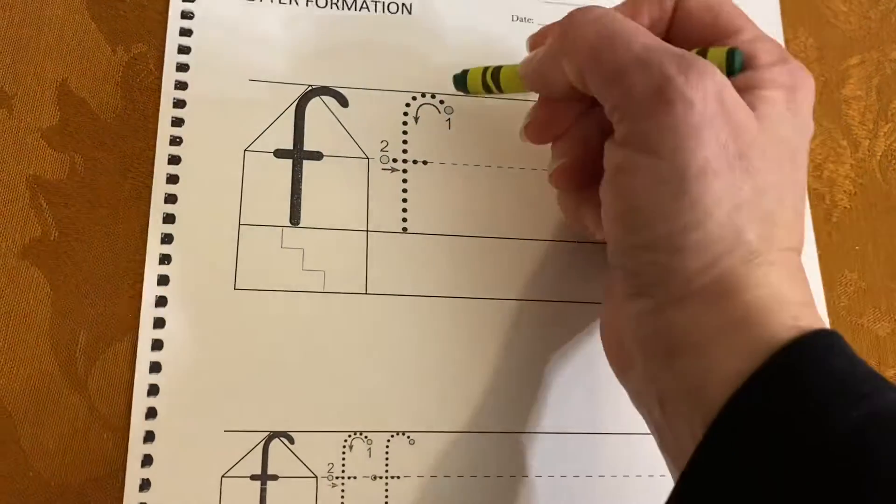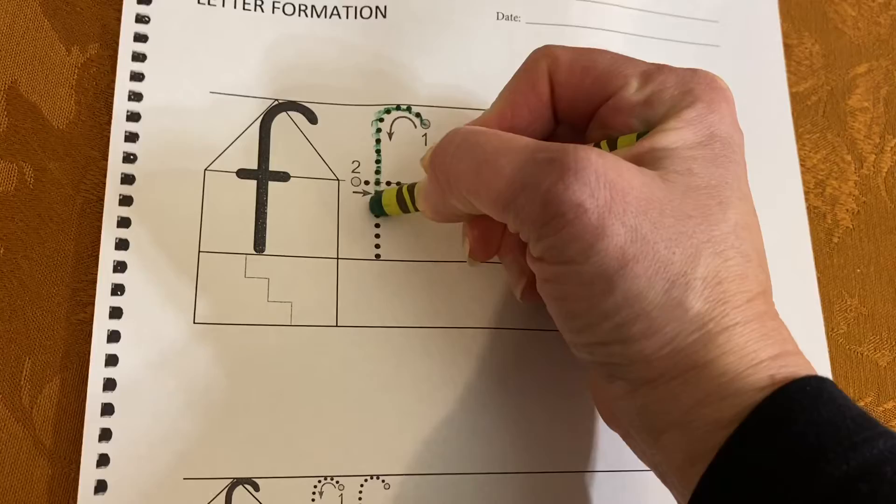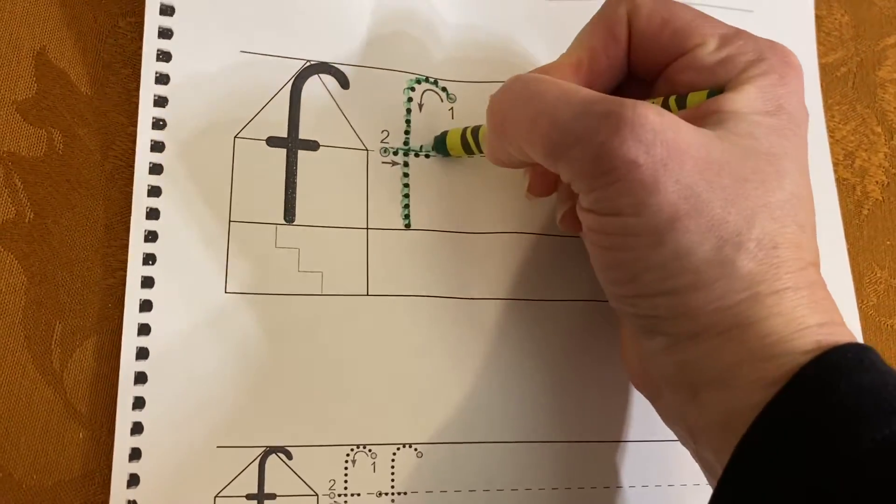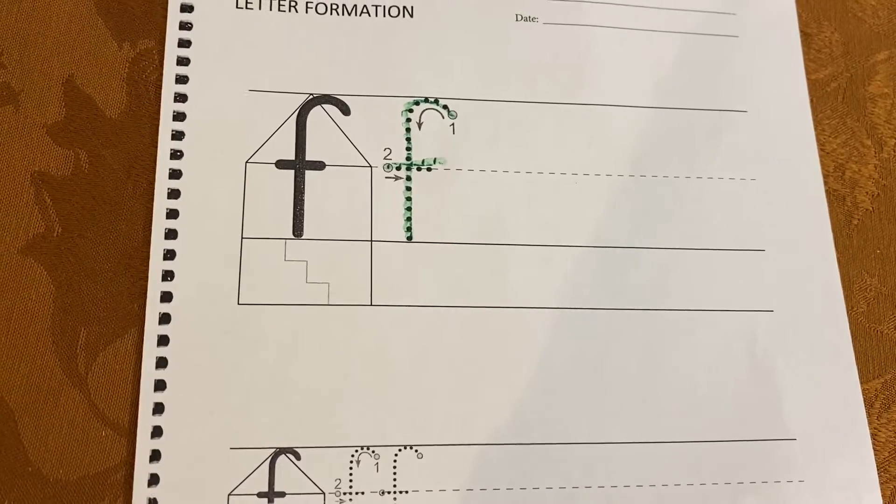Let's try. Start at that two o'clock dot, touch the top, and come to the bottom. And now do a line across at the middle. There's your lowercase f.